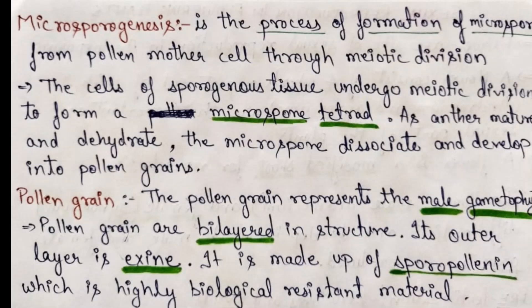Microsporogenesis is the process of formation of microspores from the pollen mother cell through meiotic division. The cells of the sporogenous tissue undergo meiosis to form a microspore tetrad — four microspores connected to each other. As the anther matures and dehydrates, the microspores dissociate from each other due to the callase enzyme and develop into pollen grains.